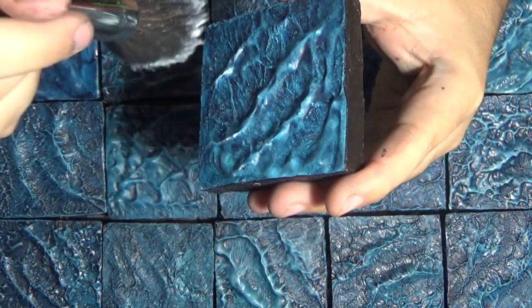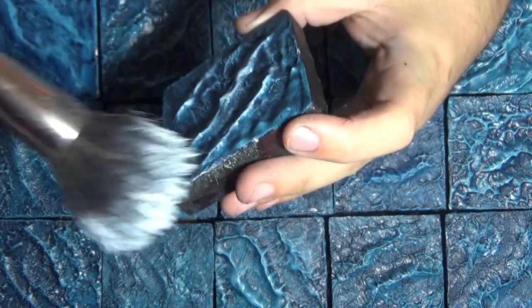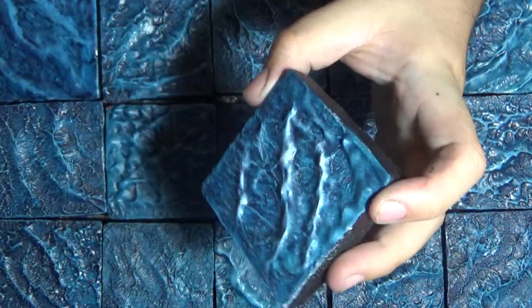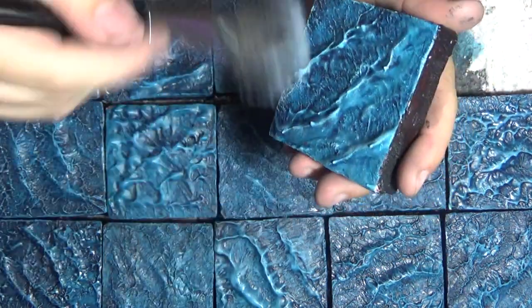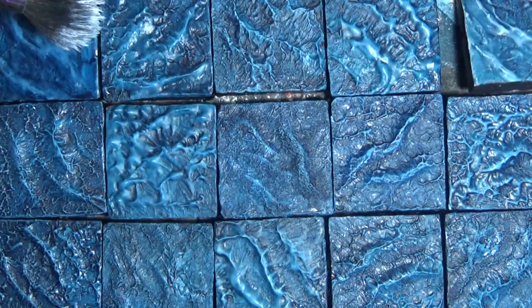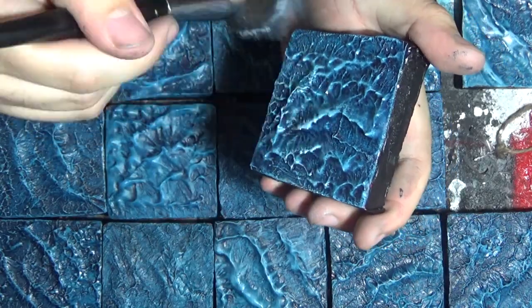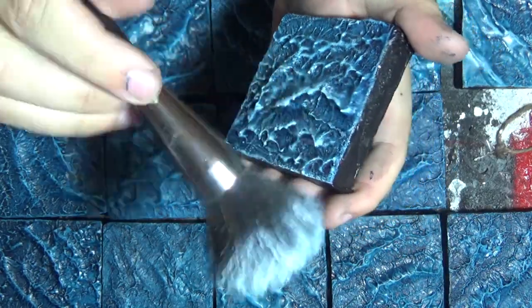And after the clear gloss I hit the very tops with a pure white dry brush to simulate the white caps of foam that waves have. This really brings it all together.